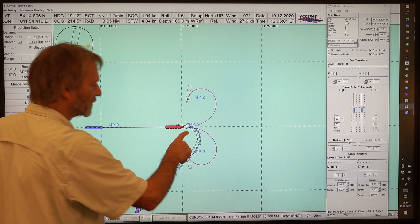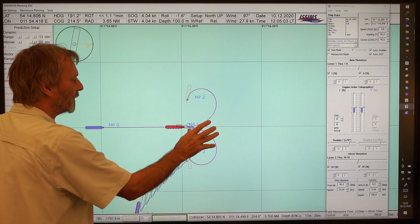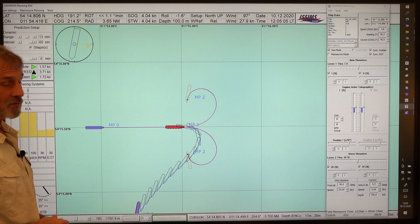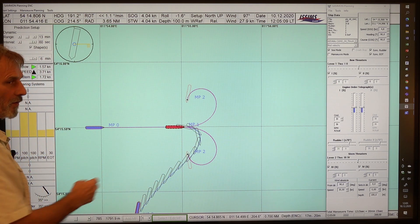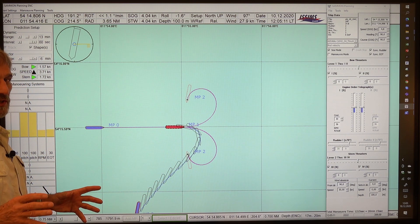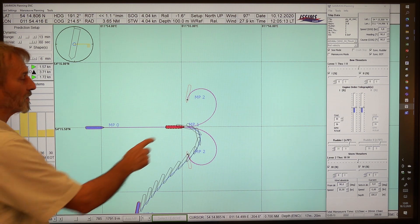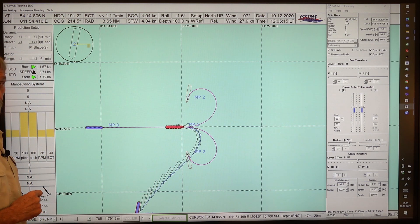This is a turning now from the same position with a rudder angle of 35 degrees to starboard. What we would see is, due to the wind pressure, the ship would not come to the same advance as we had before. And furthermore,